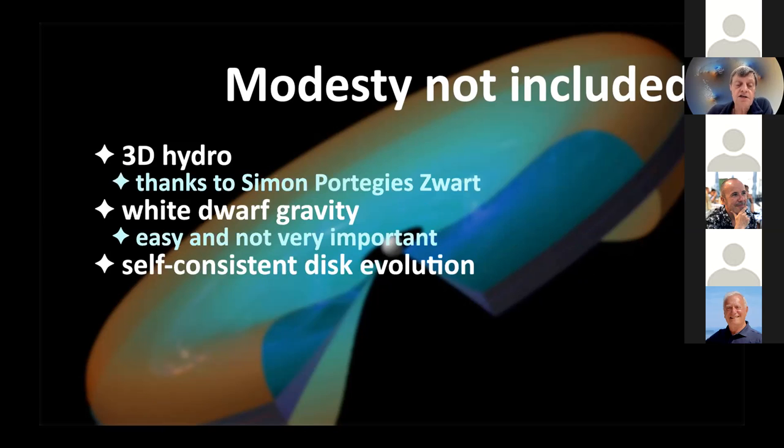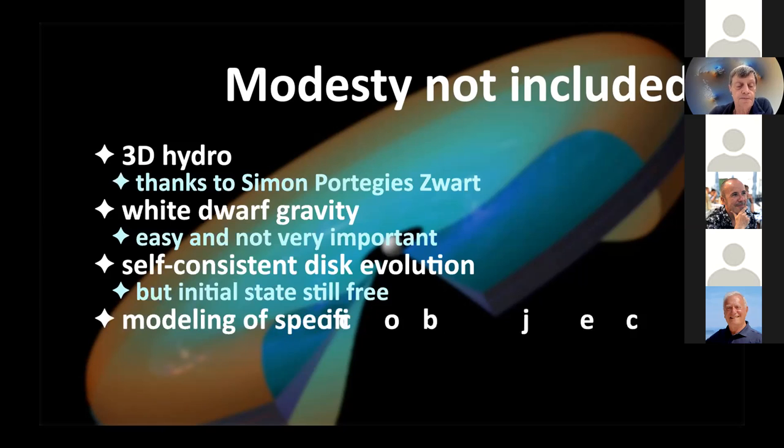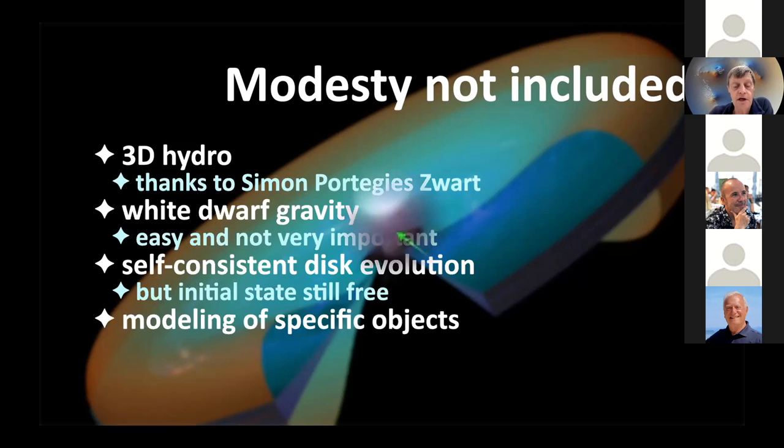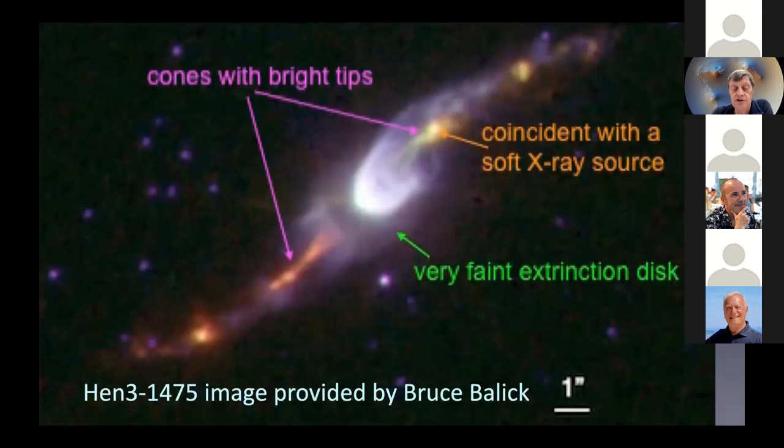A different thing is the self-consistent disk evolution. I've just simply taken a surface from which I launch the flow, and that of course needs to be improved on. But even that means that the initial state, that is to say the shape and the cross-section of the disk and the density distribution is still something that you have to specify. Ultimately, modeling of specific objects is of course going to be necessary.